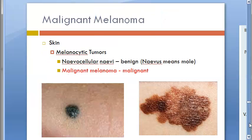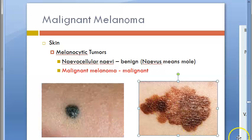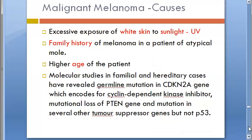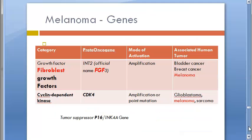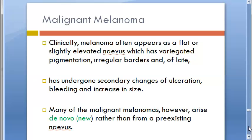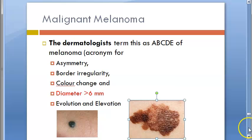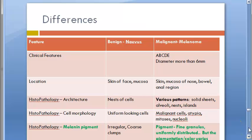In the last video you saw the difference between a nevus (mole) and malignant melanoma, the causes, and the genes involved. You also saw what ABCDE stands for: asymmetry, border irregularity, color change, diameter greater than 6 mm, evolution and elevation — and the differences between benign nevus and malignant melanoma.